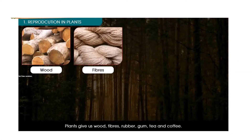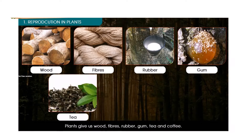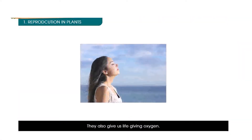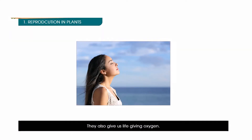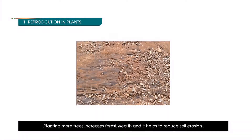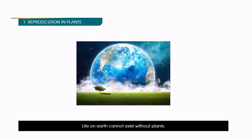Plants give us wood, fibers, rubber, gum, tea and coffee. They also give us life-giving oxygen. Planting more trees increases forest wealth and helps to reduce soil erosion. Plants make our world beautiful. Life on earth cannot exist without plants.